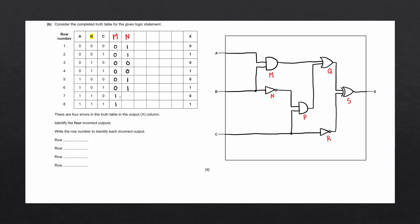The NOT gate pattern repeats: 0→1, 1→0, 0→1, 1→0, giving us 1, 0, 1, 0 for rows 5–8. The next gate is P, which is an AND gate with inputs N and C. The condition for the AND gate is that both columns need to be true for the output to be true. Row 1: C is 0, N is 1 → output 0. Row 2: C is 1, N is 1 → output 1. Row 3: 0 and 0 → 0. Row 4: 1 and 0 → 0. Row 6: 1 and 1 → satisfies the condition. Rows 7 and 8 do not satisfy the AND condition.